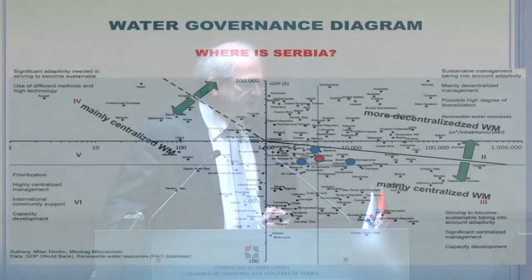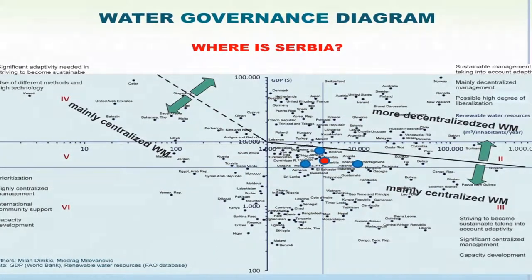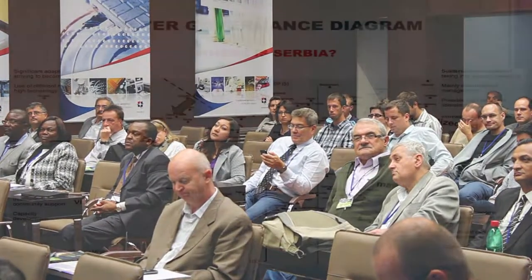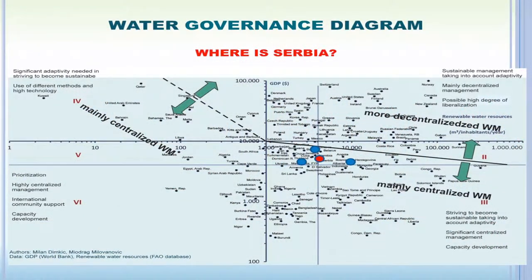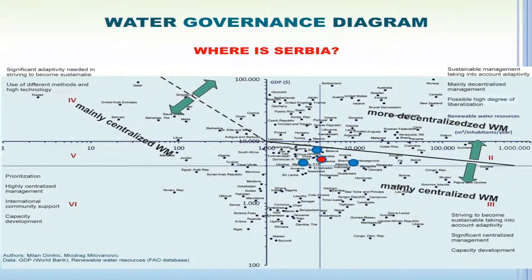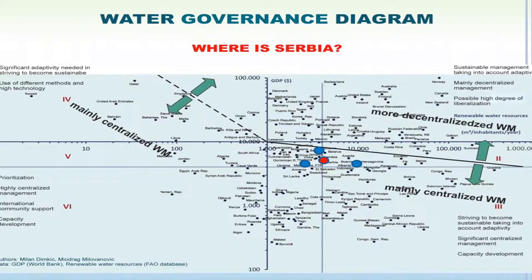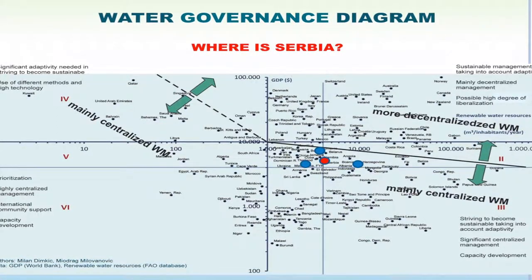The starting point of this presentation is practically the last slide seen in the presentation of Mr. Milan Ditkić during the previous day's conference about what we call the water governance diagram. On a vertical axis we show GDP per capita for countries of the world, and on a horizontal axis we have available water resources. With a red dot we place Serbia, which sits practically somewhere in the center of the diagram, showing we are in the middle both in availability of water resources and GDP or economic strength.